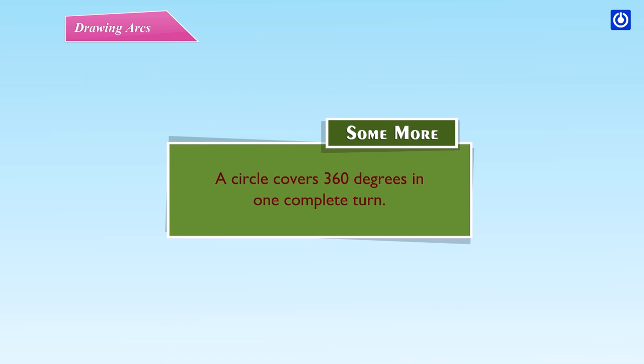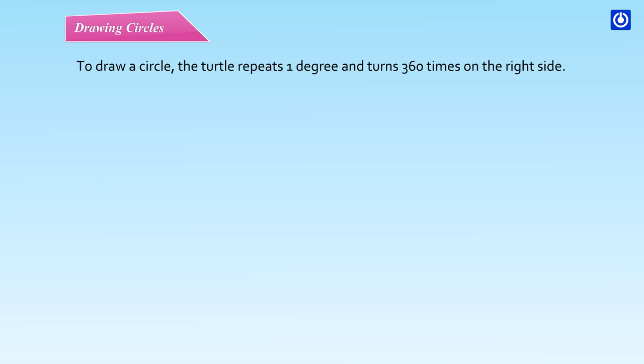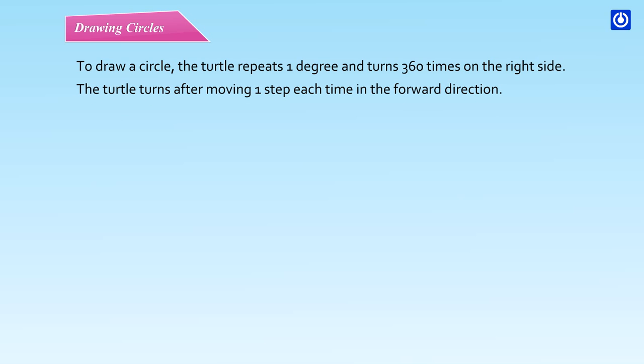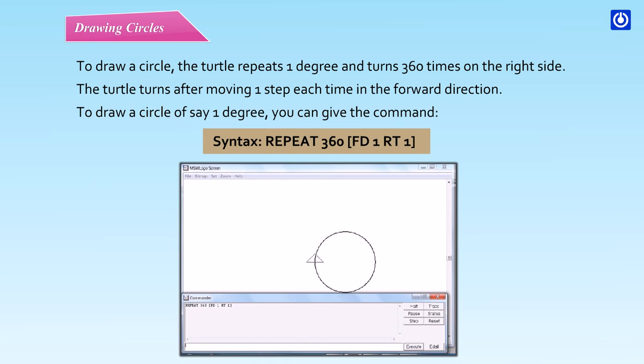A circle covers 360 degrees in one complete turn. To draw a circle, the turtle repeats one degree and turns 360 times on the right side. The turtle turns after moving one step each time in the forward direction. To draw a circle, you can give the command — Syntax: Repeat 360 [FD1 RT1].